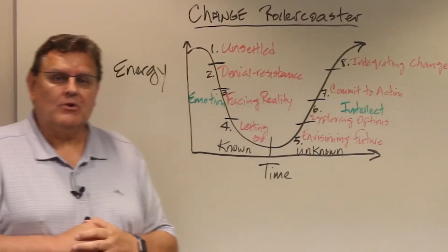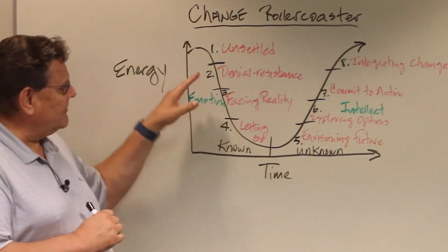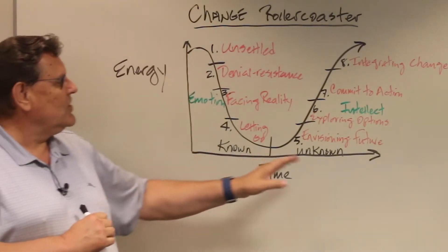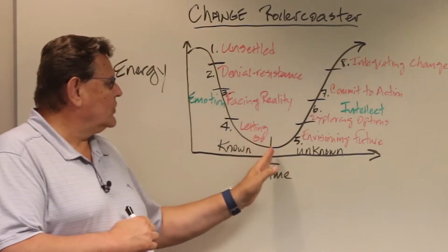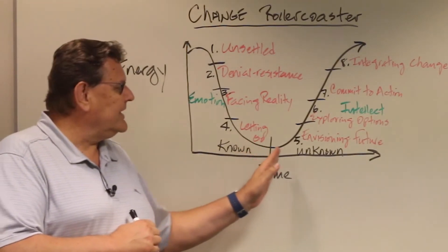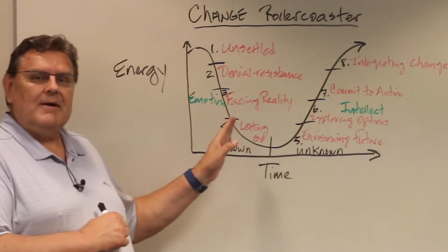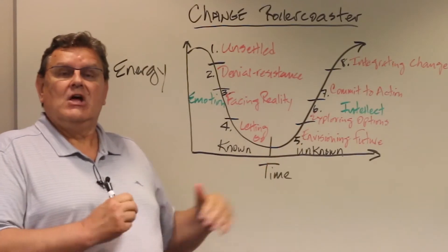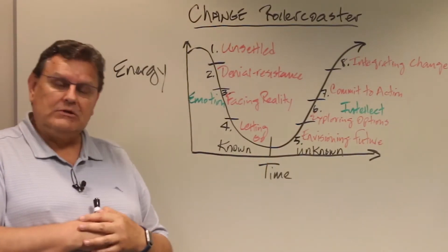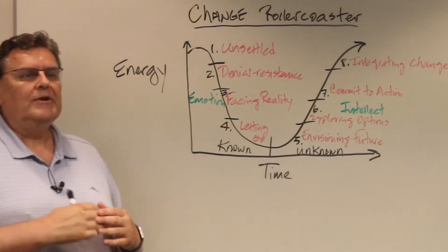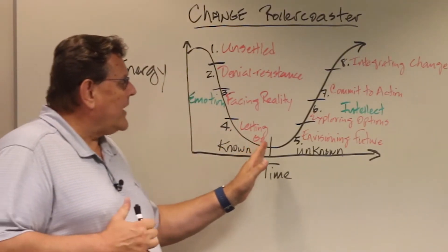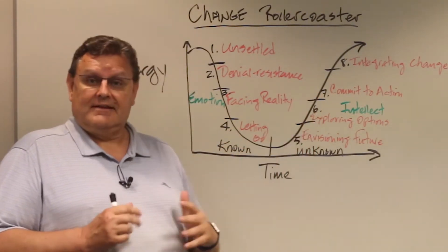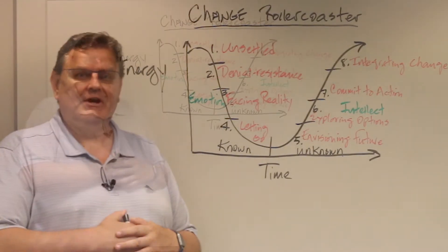So when we look at the change roller coaster, we know that we're going from the known on the left side to the unknown on the right side. We've come to the point where we've let go into the unknown. We've made a commitment to let go into the unknown, trusting God that he will lead us where we need to go. So what do we have to do once we've processed emotionally and we're ready to let go into the unknown, into the intellectual side of the roller coaster?